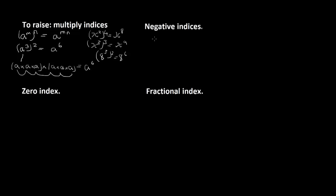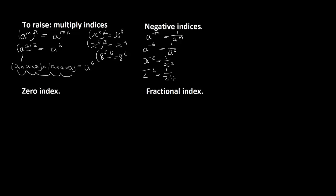Looking at negative indices: if we've got something like a to the power of minus m, that's equal to 1 over a to the m. So a to the minus 6 equals 1 over a to the 6. x to the minus 2 equals 1 over x squared. 2 to the minus 4 equals 1 over 2 to the power of 4, and 2 to the power of 4 is 2 times 2 times 2 times 2, which is 16.